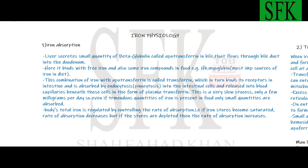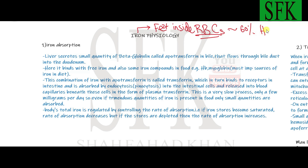Iron is a very important element in the body. It is usually in the ferrous state, present inside the red blood cells in the form of hemoglobin. Approximately 60 percent of the body's iron is present in hemoglobin — this is the most abundant form of iron found in the blood.